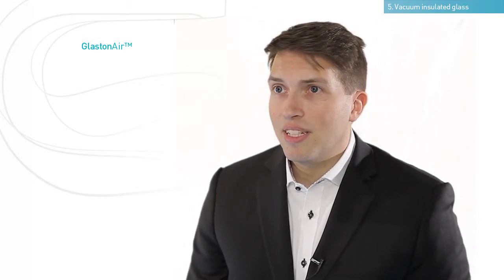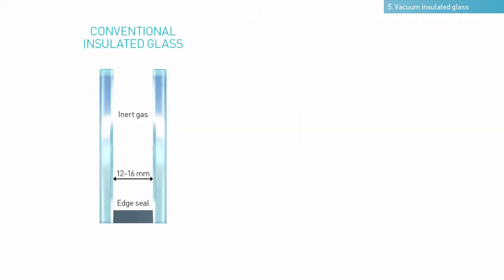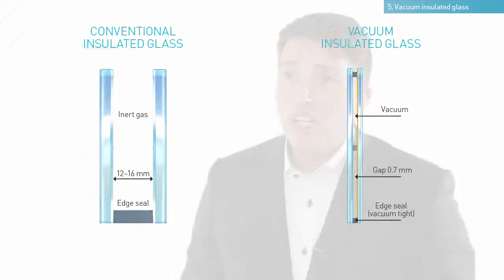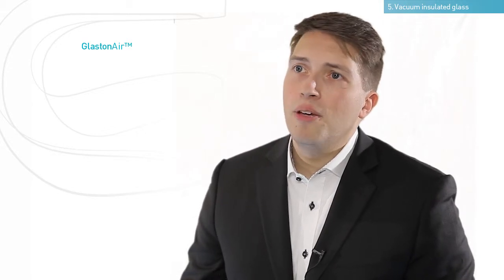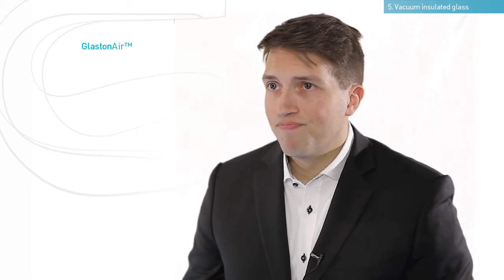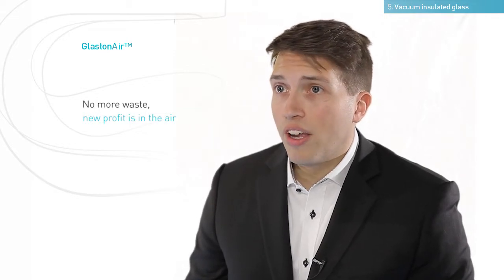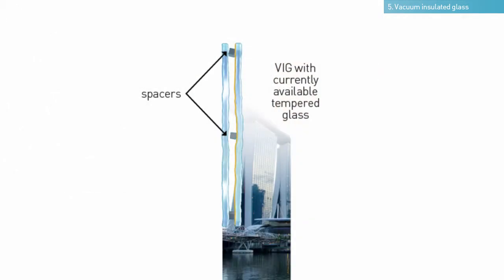Glaston air is a real game changer when it comes to the vacuum insulated glass (VIG) business. In a vacuum insulated glass unit, the normal gas between the glass panes is replaced with a vacuum that acts as an insulator. One issue hindering VIG from becoming more popular is that tempered glass quality is not up to the challenge — VIG unit production is not profitable because it is difficult to achieve the required tempered glass flatness so that the spacers attach properly between the glass panes.